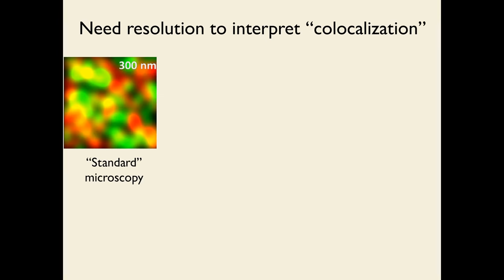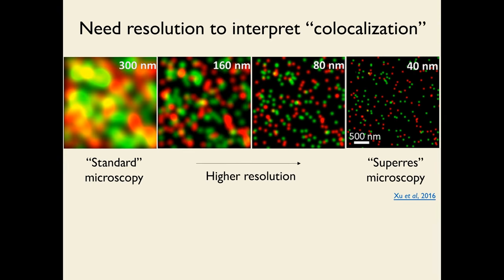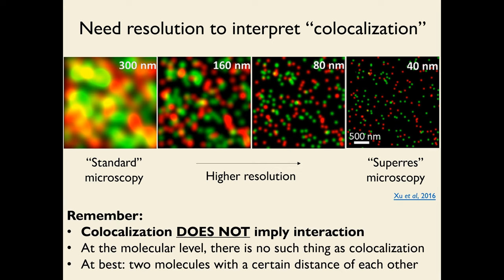In standard microscopy, a green and red marker may show a lot of overlap in yellow, but increasing resolution reveals that yellow was because things were nearby, not truly overlapping. Remember: co-localization does not imply interaction. At the molecular level, there's really no such thing as co-localization, because two things can't be in the same place at the same time.